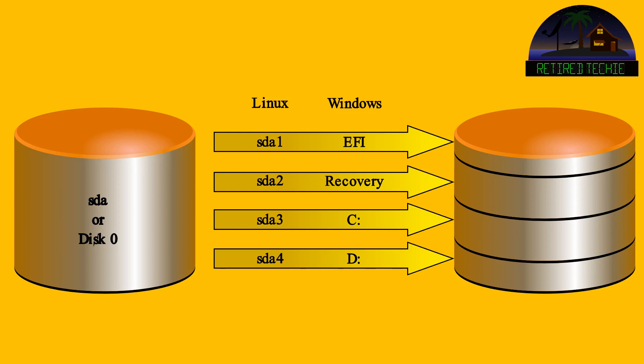In Linux, partitions are named a little differently than in Windows. For example, if we're partitioning hard drive SDA, the partitions would be SDA1, SDA2, SDA3, SDA4, and so on. In Windows on disk zero, they'd be given names like EFI, recovery, C colon, or D colon. I also want to make a distinction between partitioning and formatting. Partitioning merely divides your drive into different sections — you still need to format each section to make it usable. Formatting writes the allocation map and other information the computer uses to tell where files are stored. A partitioned drive that's not formatted is really not usable.